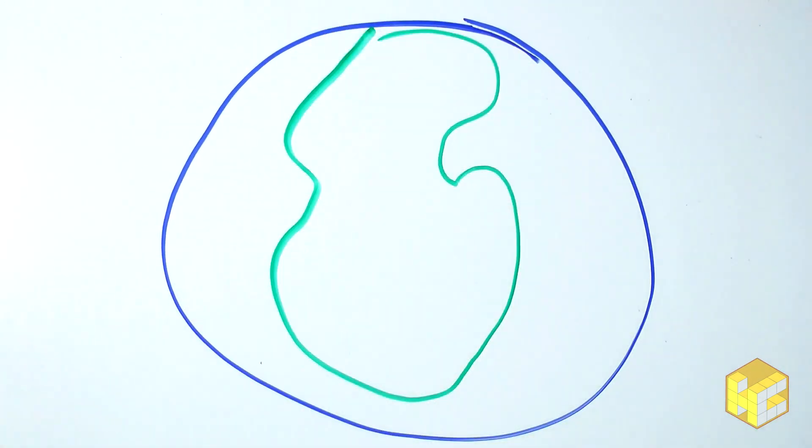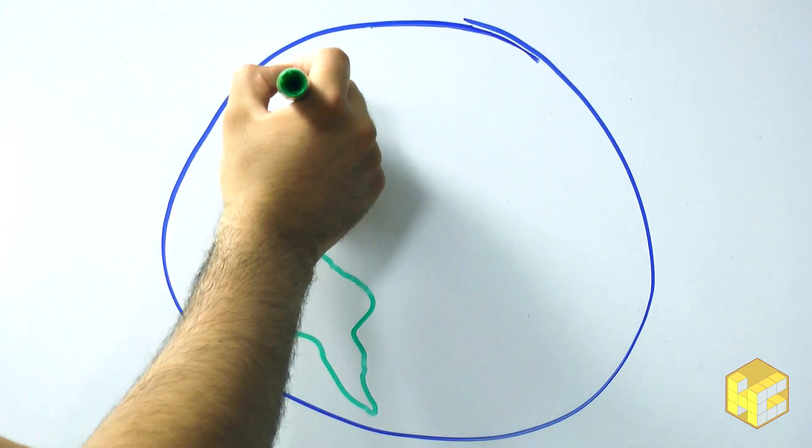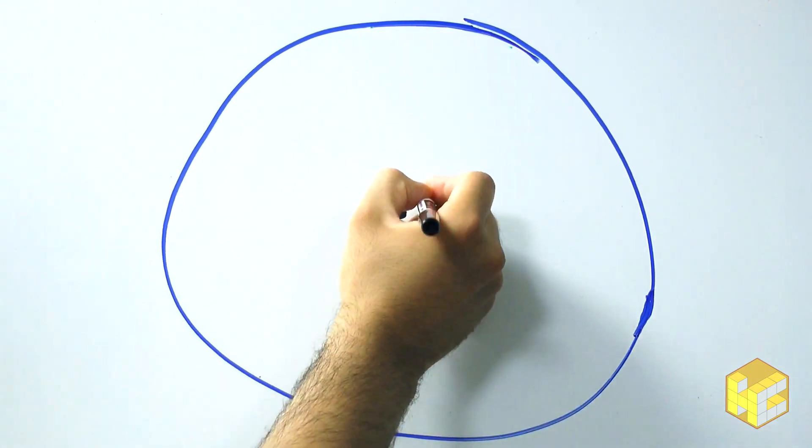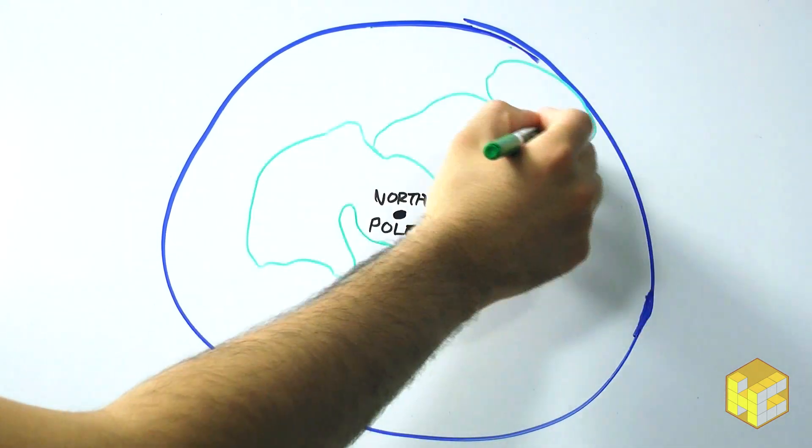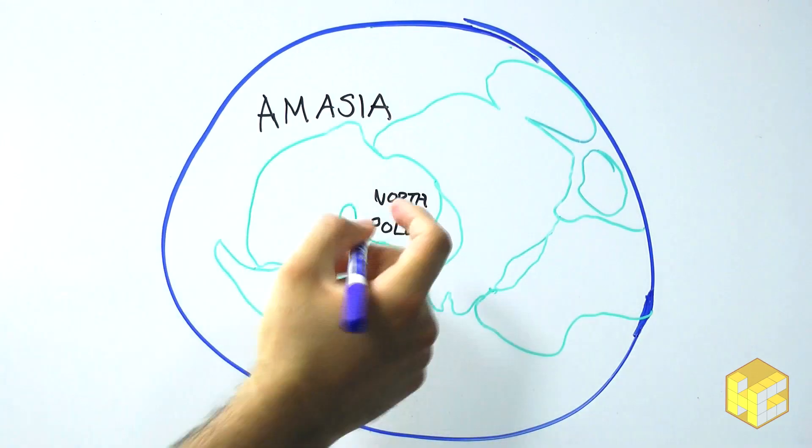Orthoversion. This new model for supercontinent formation has plates following the edge of the ring of subduction around the previous supercontinent, so that they meet 90 latitudinal degrees from where the previous supercontinent was located. According to Orthoversion, the next supercontinent will be created by the closing of the Arctic Ocean. Mitchell calls this amasia.